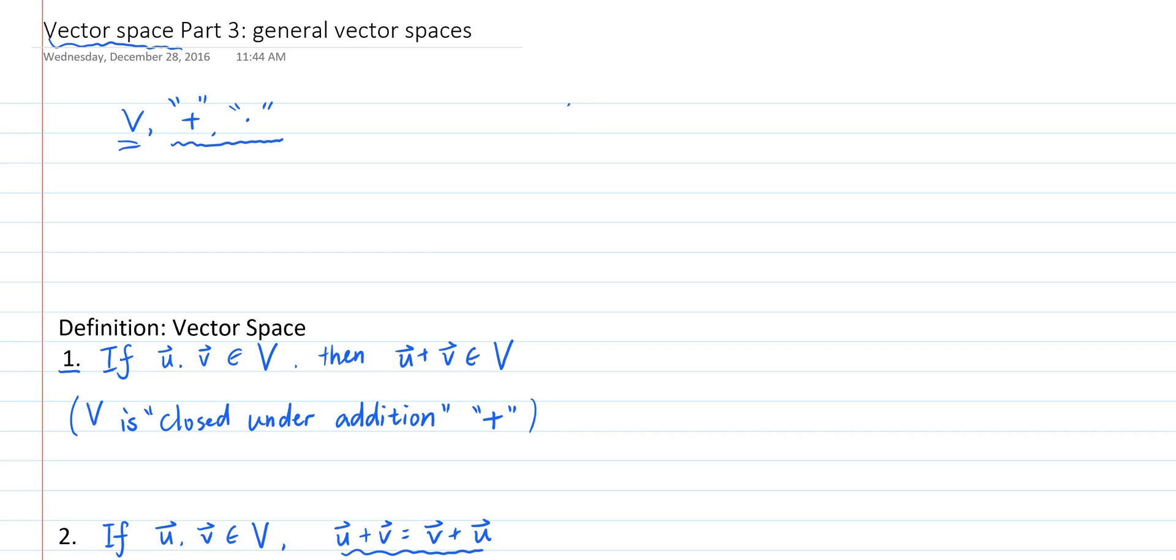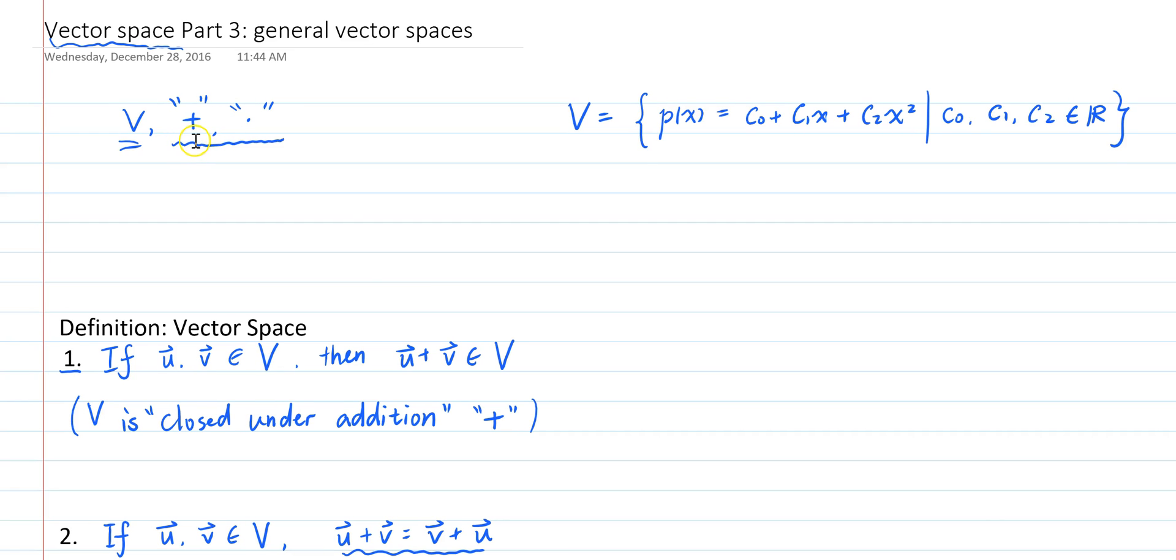For example, suppose V is the set of all polynomials of degree 2 or less with real coefficients, and the addition and scalar multiplication are defined as the usual addition and scalar multiplication of polynomials. So to add two polynomials, you simply collect the terms.